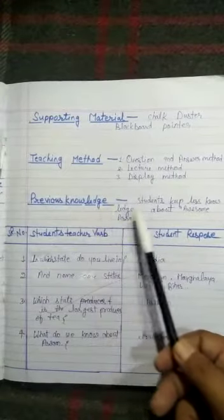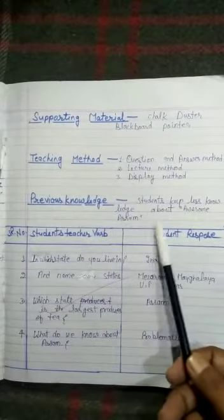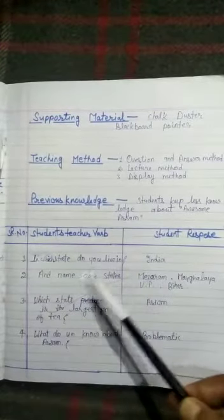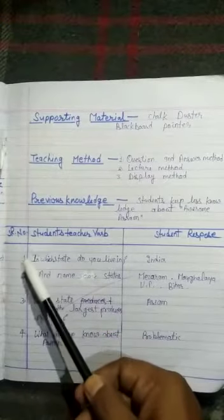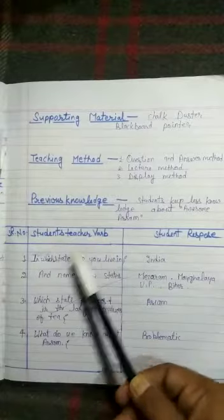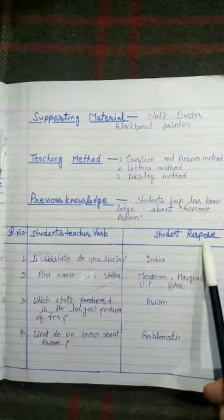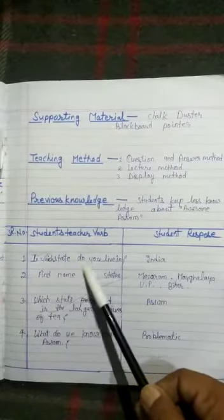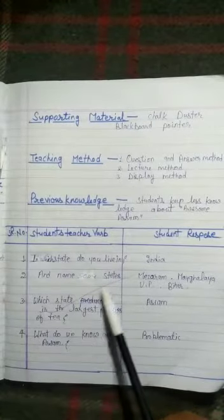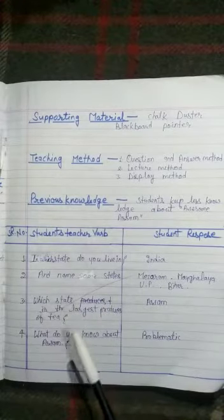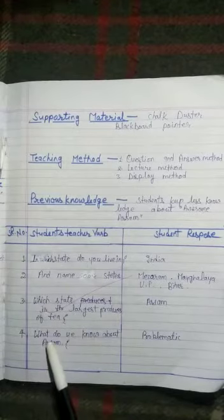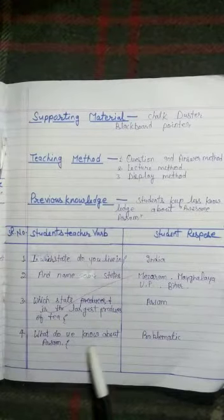Previous knowledge, students keep less knowledge about Awesome Assam. And you will draw a chart like this. You will write here lesson number, first, second, third and fourth. Student teacher verb. Next, student response. You will write here, in which state do you live in? Next, name some states. Third, which state is the largest producer of tea? And fourth, what do we know about Assam?